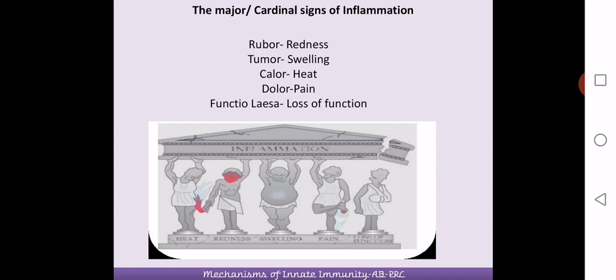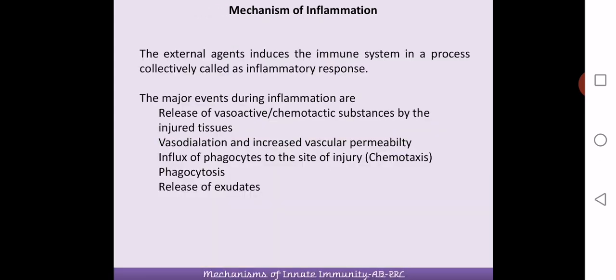The five major cardinal signs of inflammation are denoted as rubor, tumor, calor, dolor, and functio laesa. The fifth one was recently added, while the first four were initially listed in Egyptian writings. Rubor means redness of the tissues, tumor means swelling, calor means heat generation, dolor means pain, and functio laesa means loss of function. These are the five major cardinal signs and symptoms of inflammation.